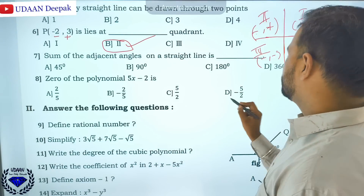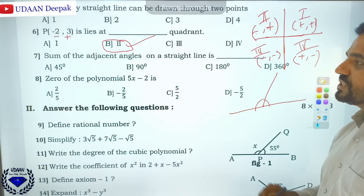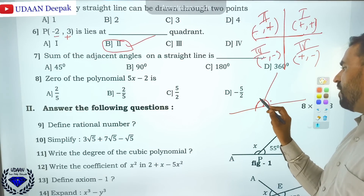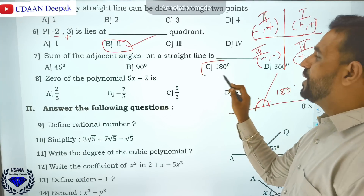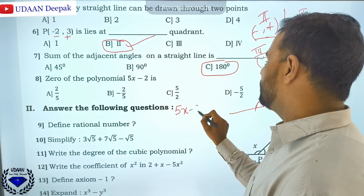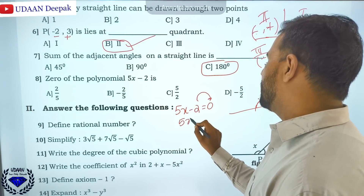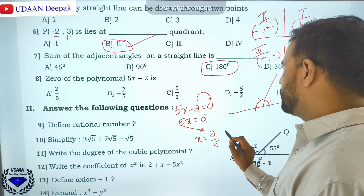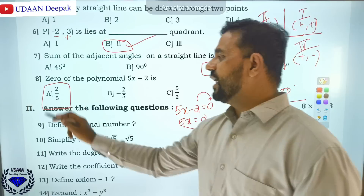Sum of adjacent angles of a straight line — suppose this is a straight line and one line is intersecting it; the sum of those two adjacent angles is 180 degrees. This is a linear pair. Zero of the polynomial: set f(x) equal to zero, take 2 to the other side, x equals 2/5. The option that gives you 2/5 is option A.